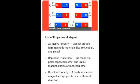They are attractive property, repulsive property, and directive property. In the attractive property, the magnets attract ferromagnetic materials like iron, cobalt, and nickel. This is called the attractive property.